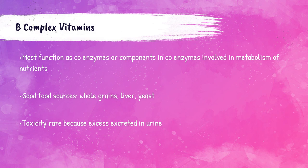B-complex vitamins are a class of vitamins that primarily function as coenzymes involved in the metabolism of nutrients. They are commonly found in whole grains, yeast, and also in liver. Having these sources in your diet is a good thing to help replenish those B-complex vitamins. B-complex vitamins are not vitamins A, D, E, and K — those are fat-soluble vitamins. B-complex vitamins are water-soluble, and thereby toxicity is very rarely seen because excess quantities of these vitamins are excreted in the urine.